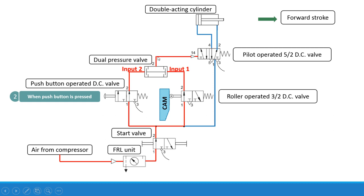So from port two, it will go over here and then it will operate the left envelope mode. Observe carefully this particular left envelope mode — this is the pilot line and we get the left envelope mode. As we are getting this left envelope mode, the air — indicated by the blue line — will go from one to port four and then enter into the cylinder side of the double acting cylinder. The piston will move in the forward direction, and the air from the rod side from port two will enter into port three and then be discharged to the atmosphere.